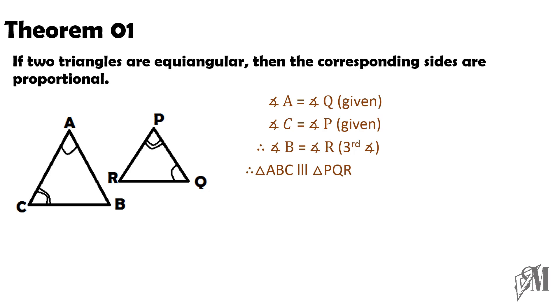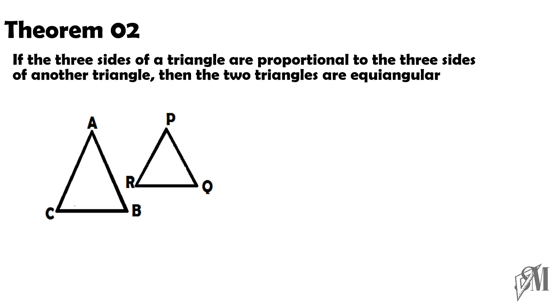Because these two triangles are equiangular, we can write the corresponding sides and show they are proportional. This is the first theorem related to equiangular triangles. The converse of this theorem is the second theorem: if the three sides of a triangle are proportional to the three sides of another triangle, then the two triangles are equiangular.